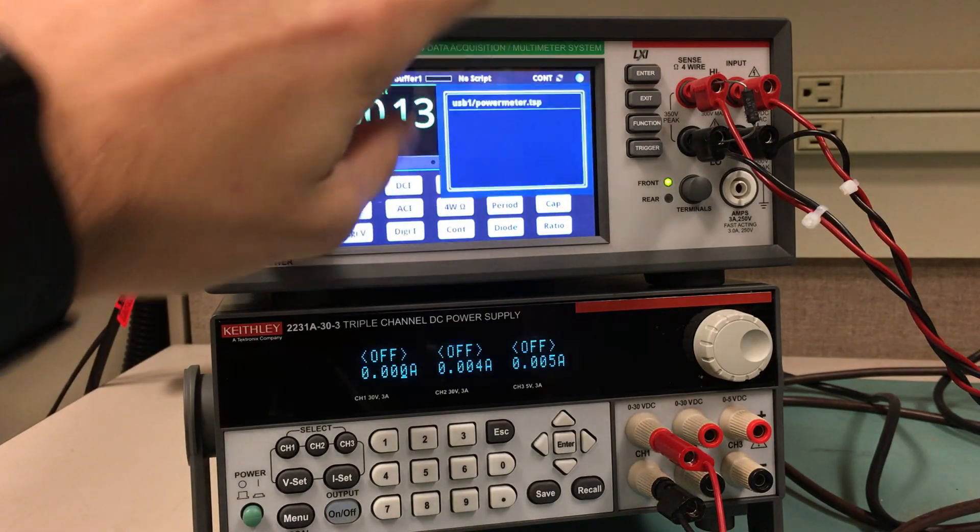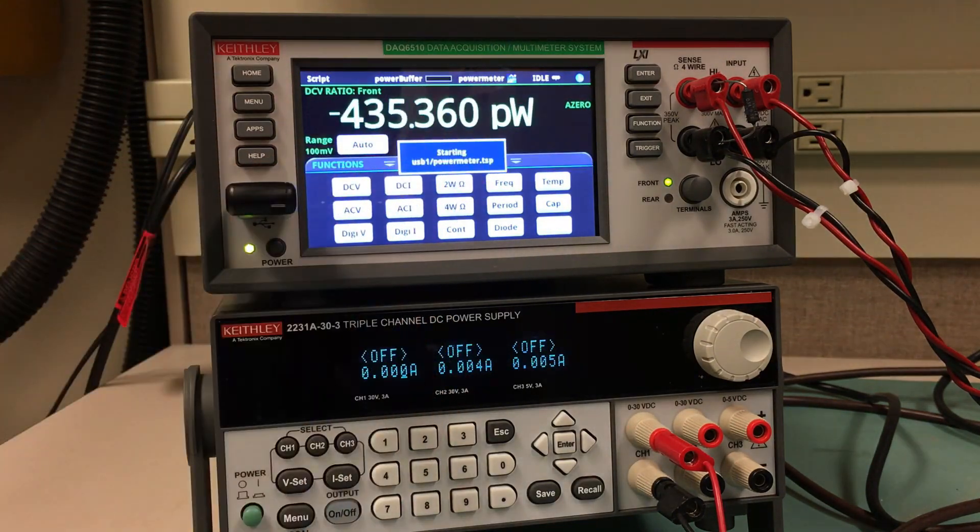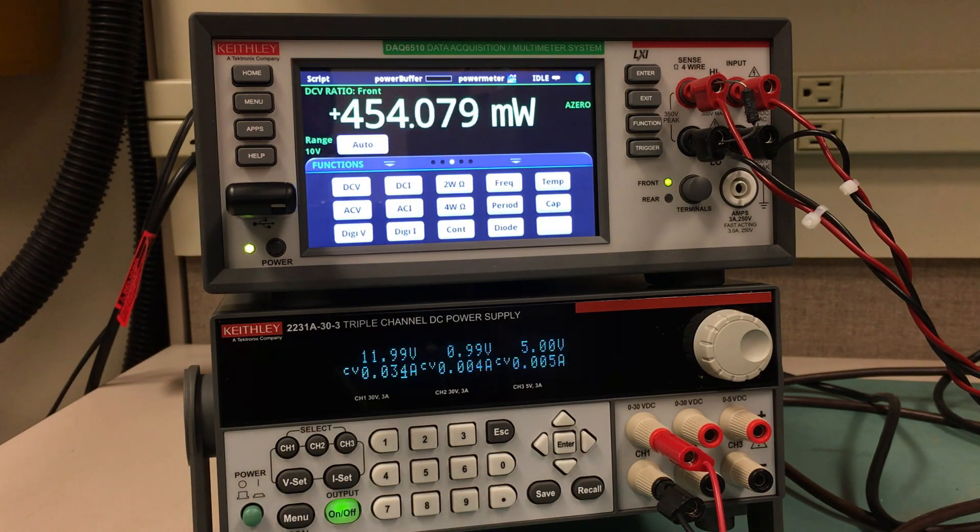With the help of some TSP scripting, we can get the results shown here. We will go into more detail about how the script works in the second half of this video. We can actually show the power measurement live on screen with watts as units. TSP allows the instrument to do all the necessary math to display power. The script being run is available below.